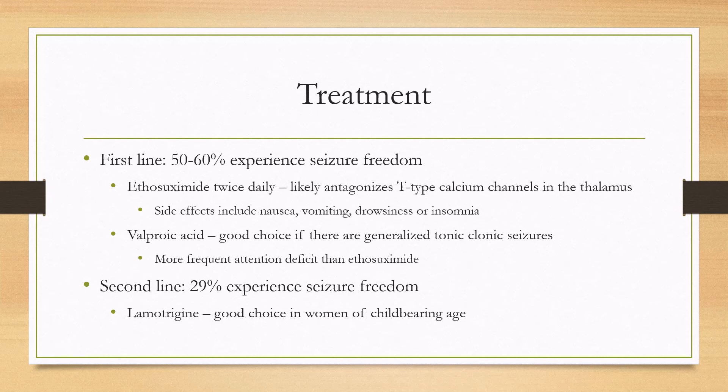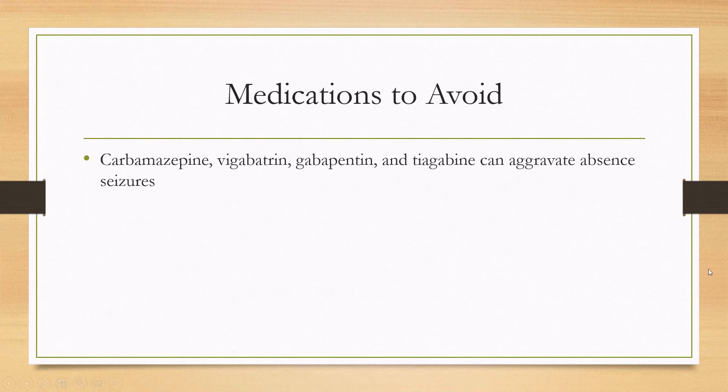Another medication that can be used as second line is lamotrigine. This is a good option in women of childbearing age, particularly if they've failed ethosuximide, and it results in about 29% of people achieving seizure freedom. There are also some medications that need to be avoided as they can provoke absence seizures: carbamazepine, vigabatrin, gabapentin, and tiagabine.